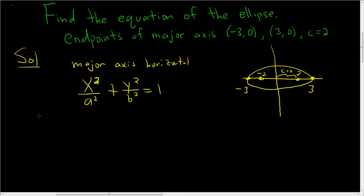So here a is 3 and c is 2. So we end up with x squared, a squared is 9, plus y squared over b squared, and this is equal to 1.